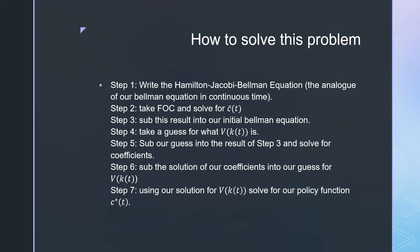We then sub this guess into step three and solve for our coefficients. After solving for our coefficients, we plug them into our guess for V(kt). Step seven is using our solution for V(kt) to solve for our policy function c*(t).